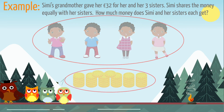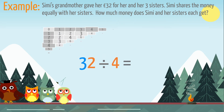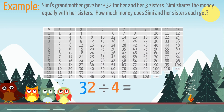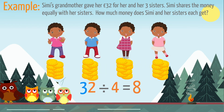The calculation we need to solve is 32 divided by 4. We can use a division fact from our 4 times tables to work out the answer. 32 divided by 4 equals 8. They all get 8 pounds each.